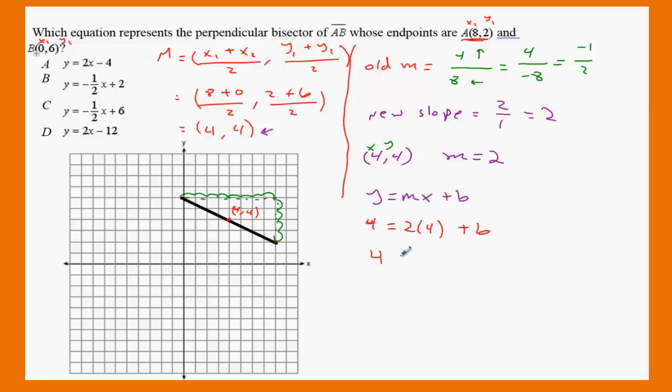That's going to be 4 equals 8 plus b. Subtract 8 from both sides. You get negative 4 equals b. b equals to negative 4. Therefore, the new equation is y equals m2, x plus b, which is minus 4. This is the equation of the line of the perpendicular bisector of the endpoints 8 and 2. Which one here? This is choice A.